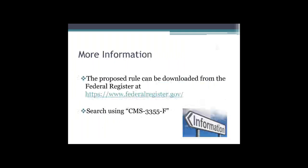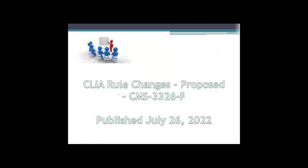Just shortly after the finalized rule changes came out, the Feds also issued a proposed rule. When a rule comes out, it is often in a proposed state with a comment period for folks in the industry to comment on the proposed language. All of the comments are gathered and then reflected upon, sometimes with changes being made as a result. It is our opportunity to let the rule writers know our opinions on whether certain elements will work in the real world. These proposed rule changes were published on July 26th with a comment period already having ended on August 25th. We are now waiting for the finalized changes, not expected to be released until after the first of the year because of the large volume of comments received.